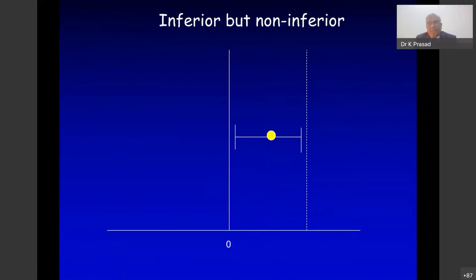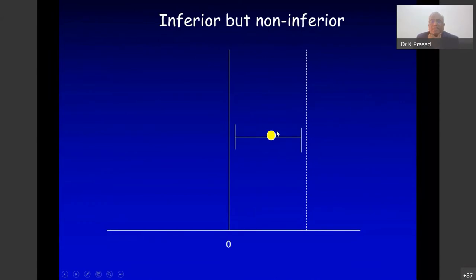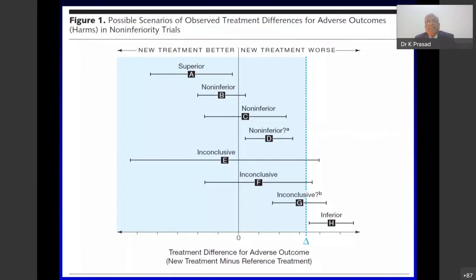If you get a result between the line of no difference and the margin — not crossing the non-inferiority threshold — it is non-inferior, but since it is certainly worse than the other treatment it is statistically inferior but within the acceptable margin. This type of result requires a large sample size study and doesn't arise commonly, but when it does we call it non-inferior.